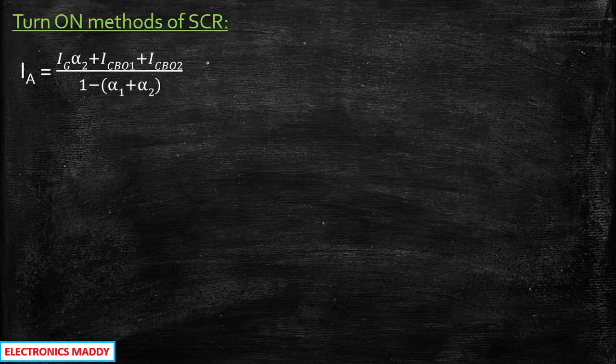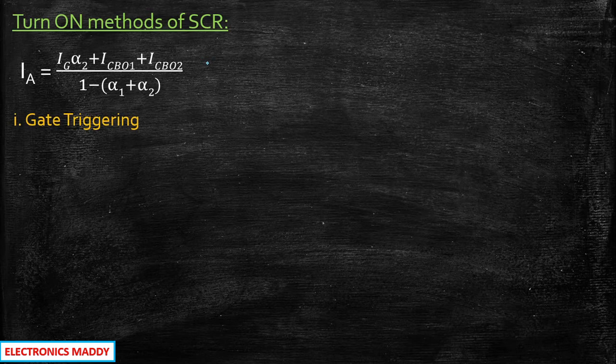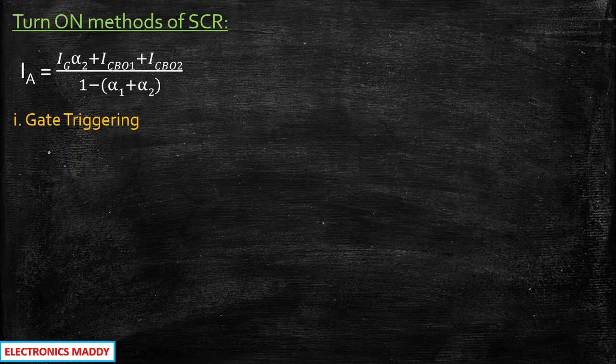What are the various methods currently available to turn on an SCR? There are five methods. The first and foremost — and the most popularly used — method is the gate triggering method. If you refer to some textbooks, they will directly give you some statements, but you need to understand why those statements are given.